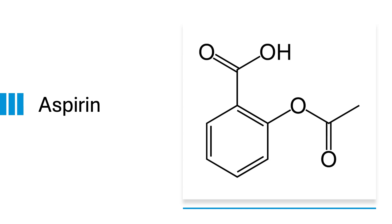If you look at the structure of aspirin, it has some important functional groups. We will first draw the core structure. Benzene is the core part in this structure, so we start by drawing the benzene ring first. Then we add two functional groups — a carboxylic acid at one position and an acetyl group at another position. Let's see the demonstration of this.